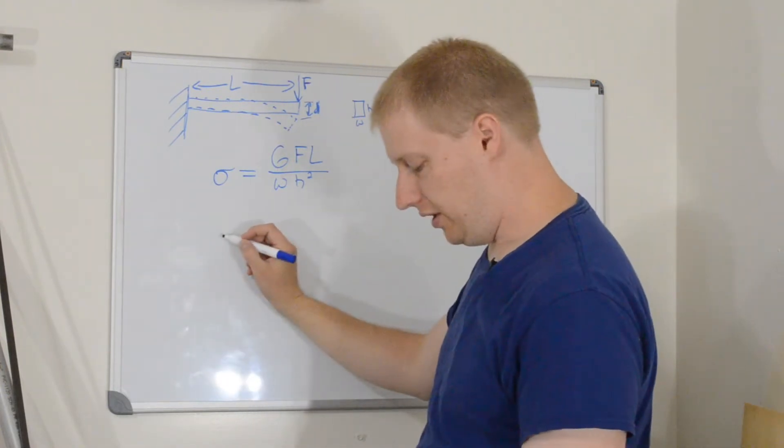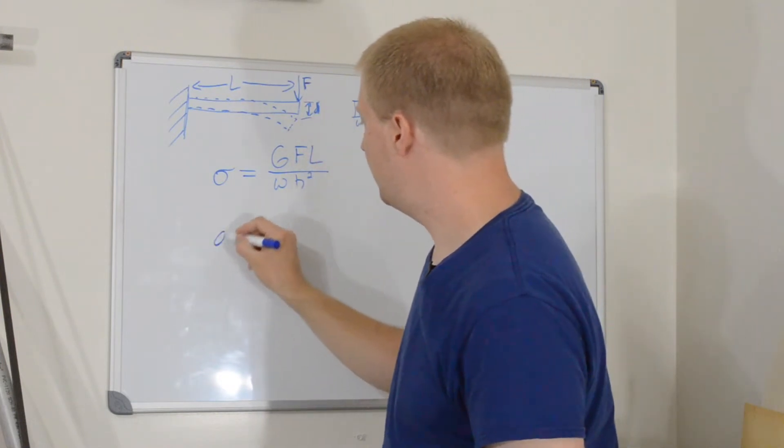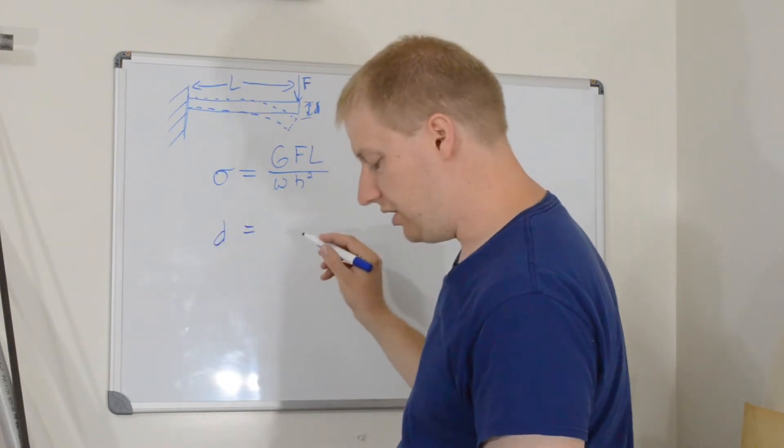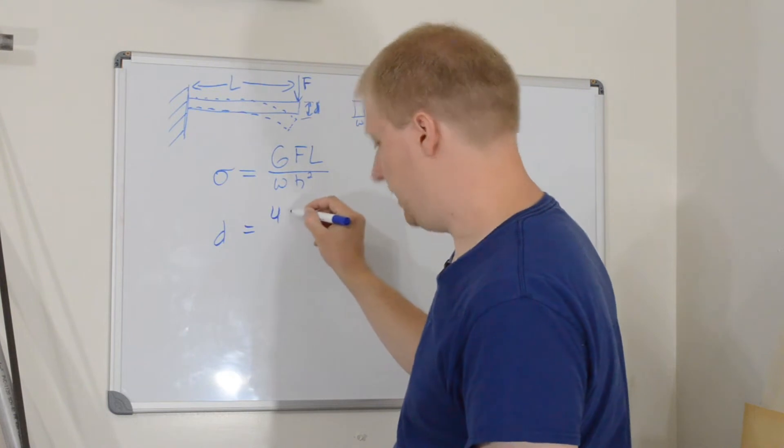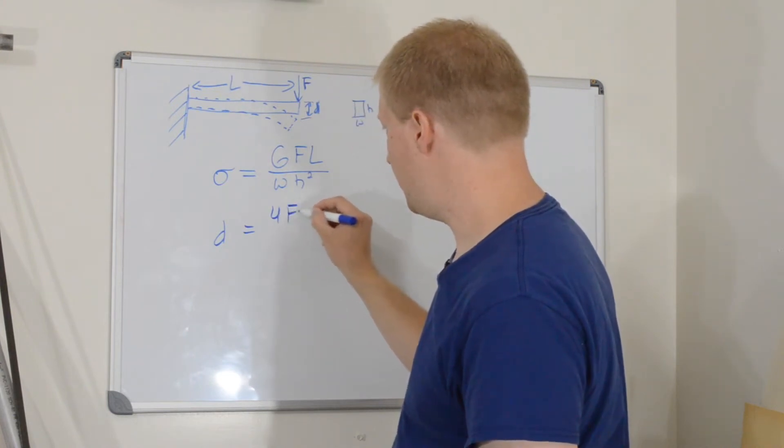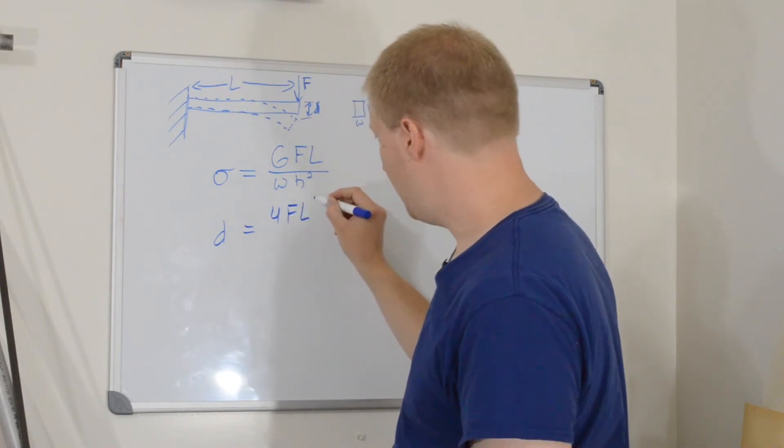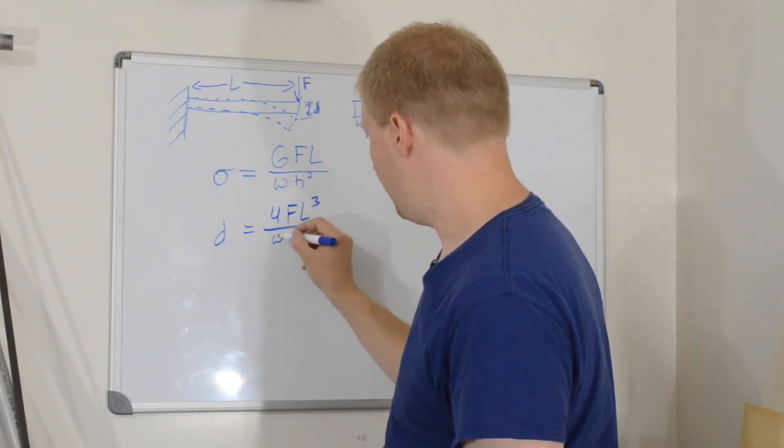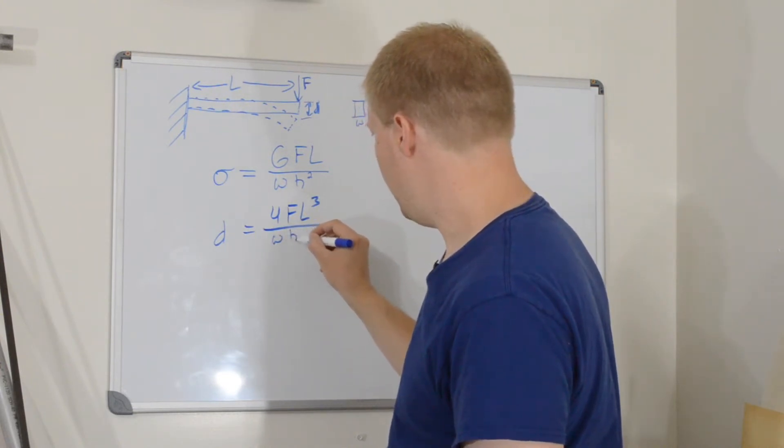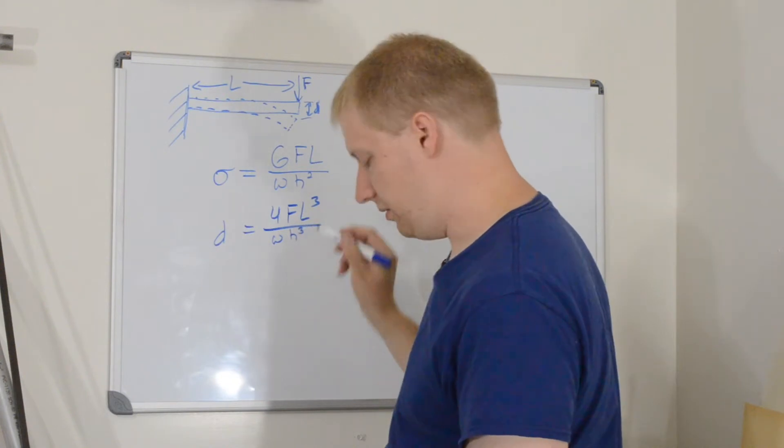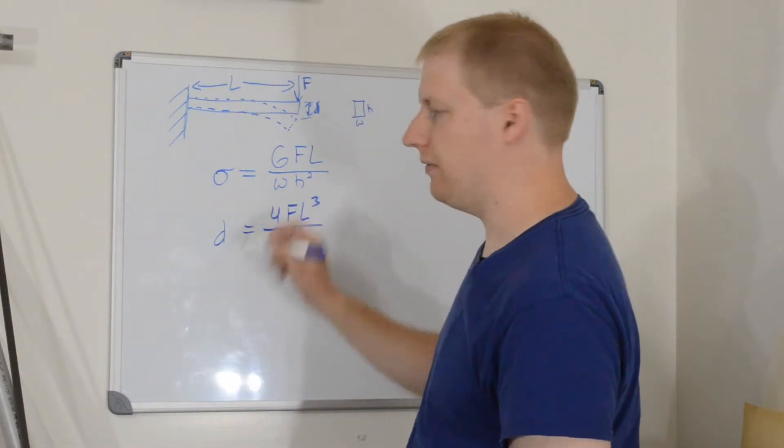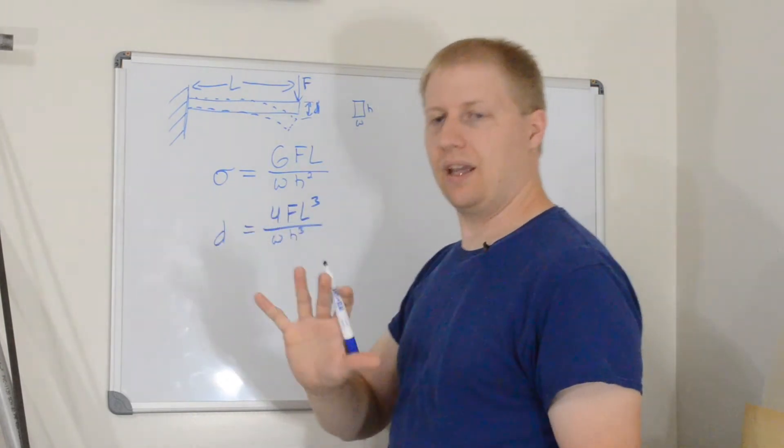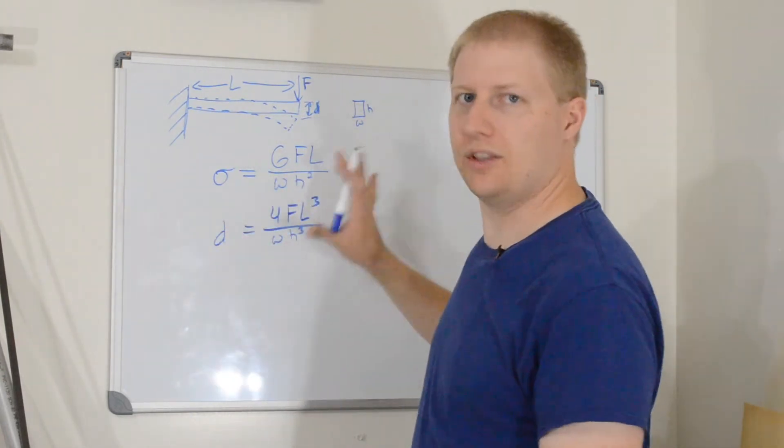Now, if we wanted to look at the deflection, the deflection is equal to 4 times the force times the length cubed over the width times the height cubed. I made a small mistake somewhere in there. You're supposed to have the stiffness of the material, but that doesn't matter. Don't worry about the math.